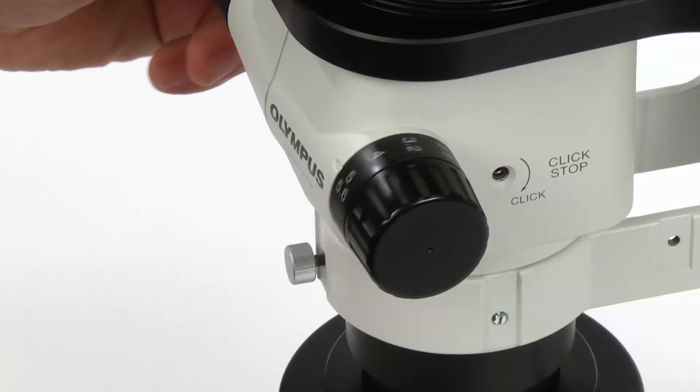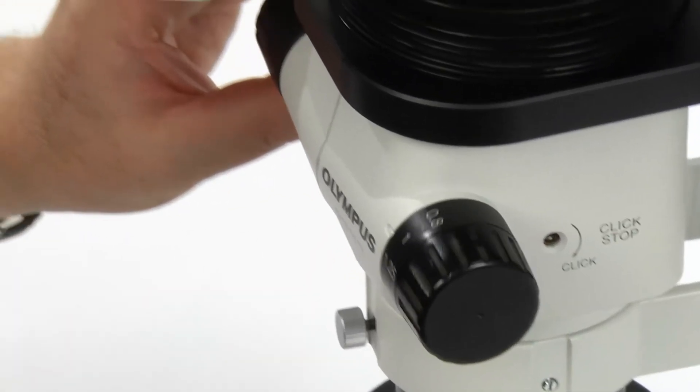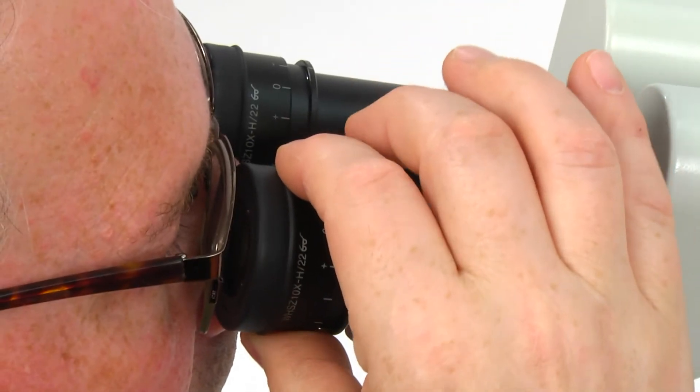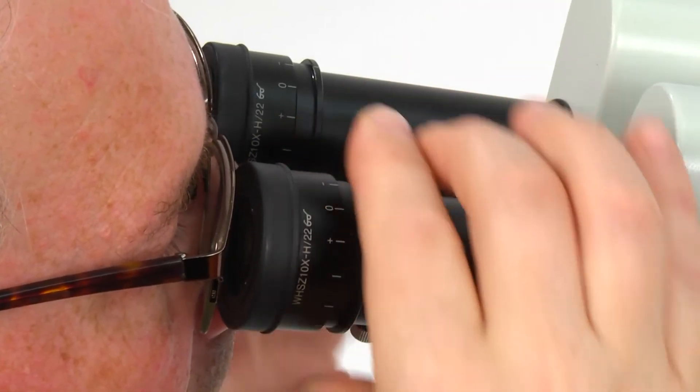Finally, set the zoom adjustment knob for the lowest magnification and rotate the diopter adjustment ring of the left and right eyepieces to bring the sample into focus.